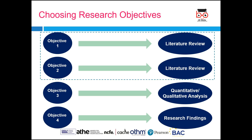We also discussed this in our last session: your objective one and objective two are achieved using the literature review, which means that you will conduct a critical review of literature, report the findings, and this will be reflected in your conceptual framework. This is how you use the literature review for your dissertation.